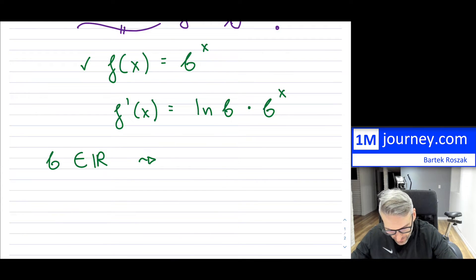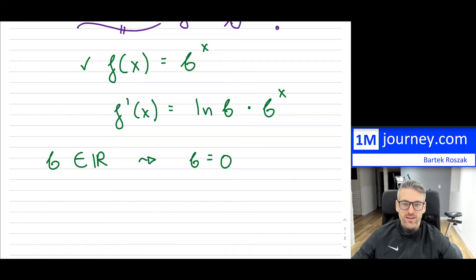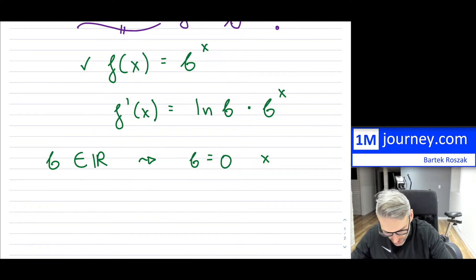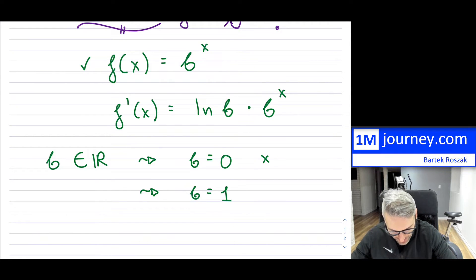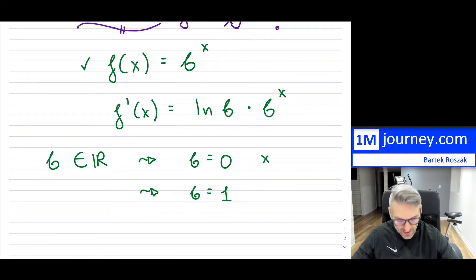Number one, we can't have b equal to zero — zero raised to anything is just zero. We also exclude the case when b is equal to one, because one raised to anything is going to equal one — it's just a flat line — so that's not what we're interested in either.